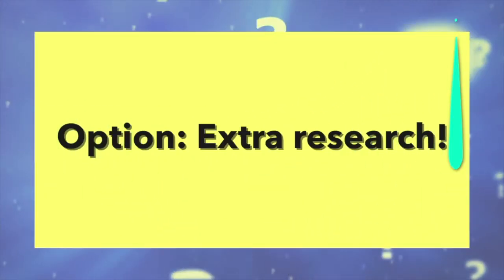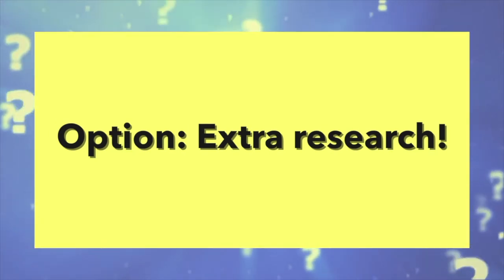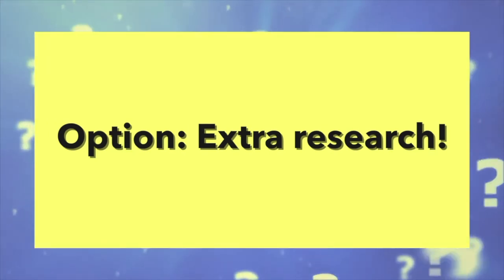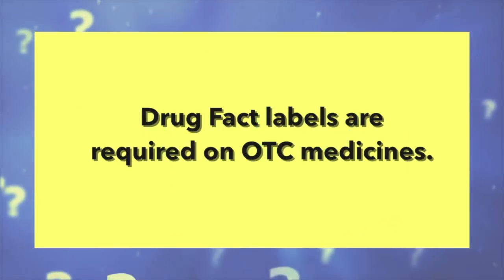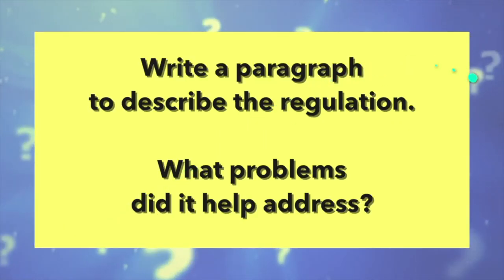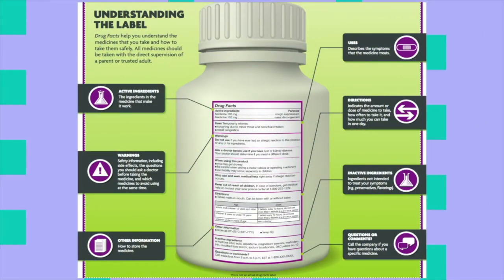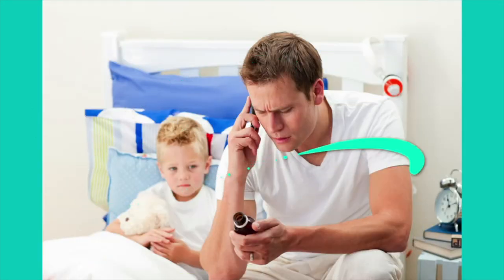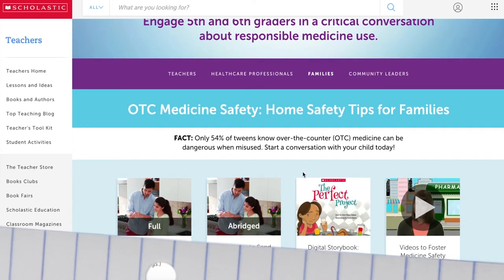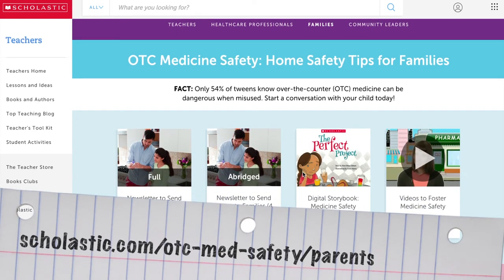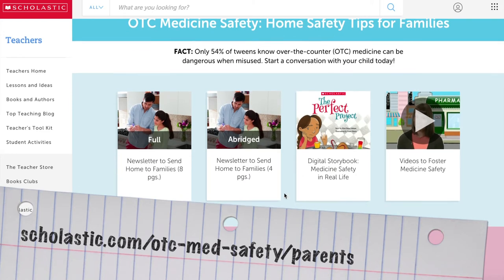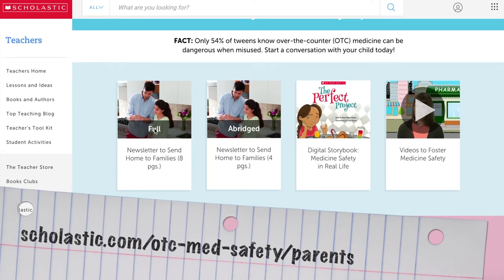An option at the end of class is to provide a research extension. Offer this prompt: research the regulation that required drug facts labels to appear on OTC medicines, and write a paragraph describing the regulation and identifying some of the problems it helped to address. After exploring the drug facts label, be sure to send home the family newsletter resource available at scholastic.com/otcmedsafety/parents so students may continue the conversation at home.